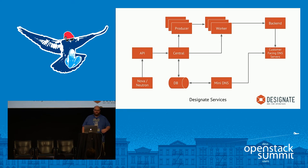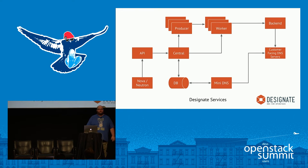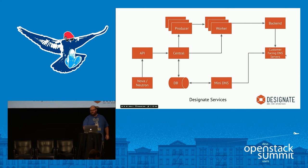We always have to have an architecture slide. For Designate we have an API service, a central service equivalent to a conductor that talks to the database, workers which scale out horizontally depending on workload, and a producer that kicks off periodic tasks and sends them to the workers. All of it uses pluggable backends — we support Bind9, PowerDNS, NSD, Akamai, Dynect, and Microsoft DNS.